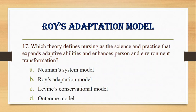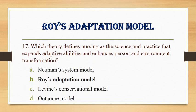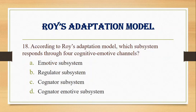Number 17. Which theory defines nursing as a science and practice that expands the adaptive abilities and enhances person and environment transformation? A. Newman's system model, B. Roy's adaptation model, C. Levin's conservation model, D. Outcome model. Answer: B. Roy's adaptation model.